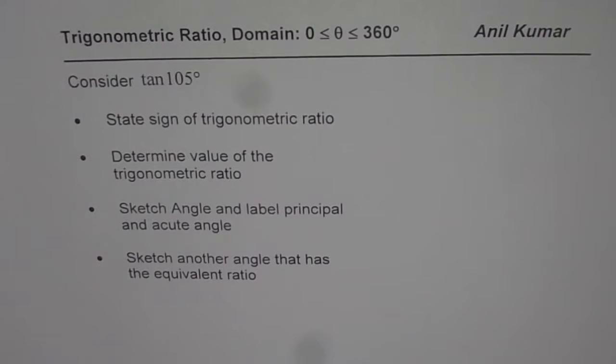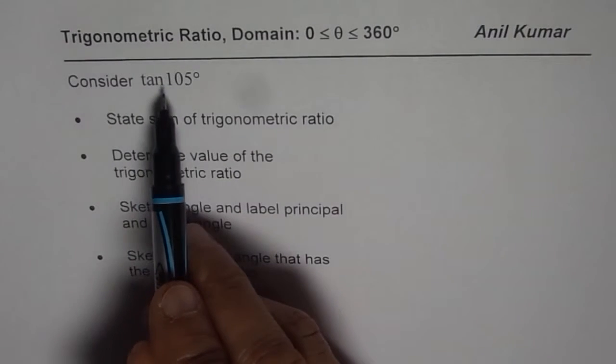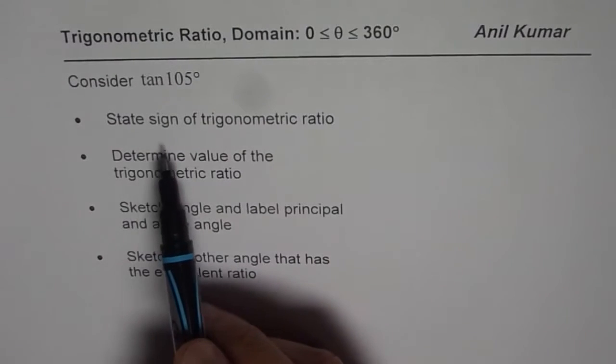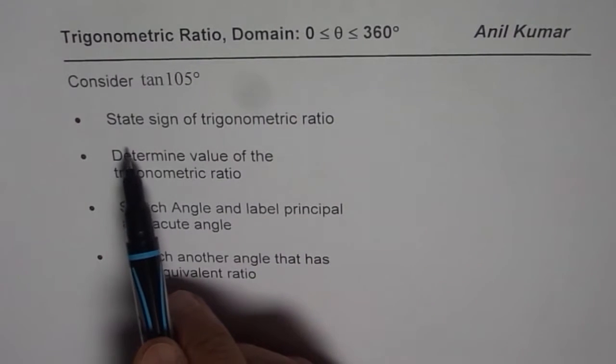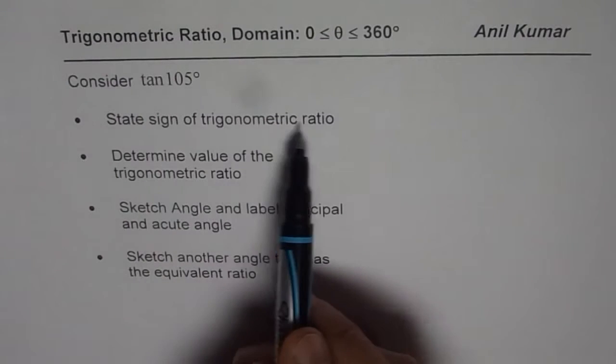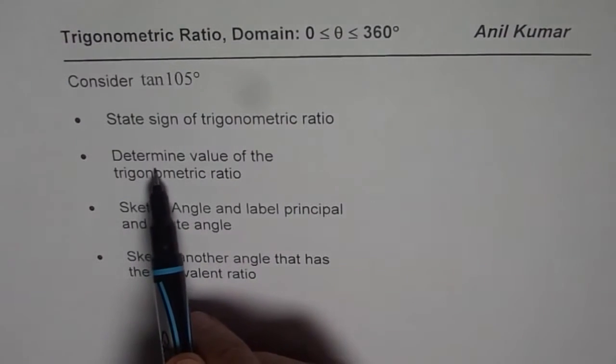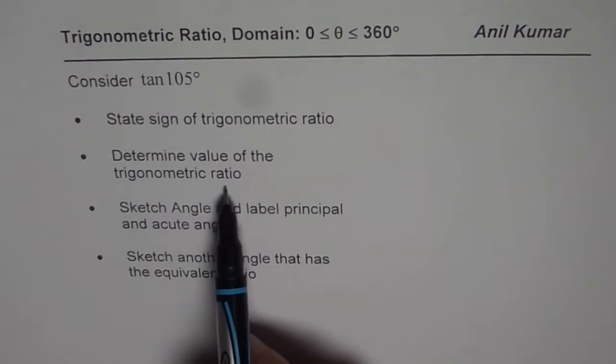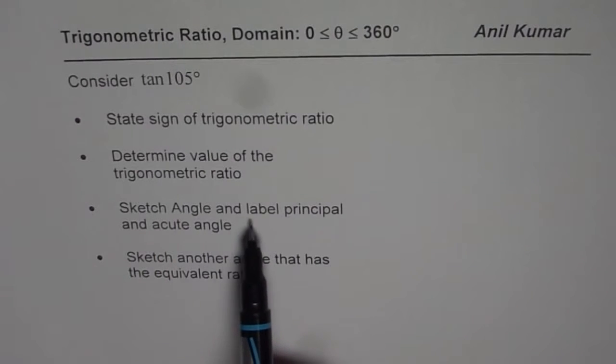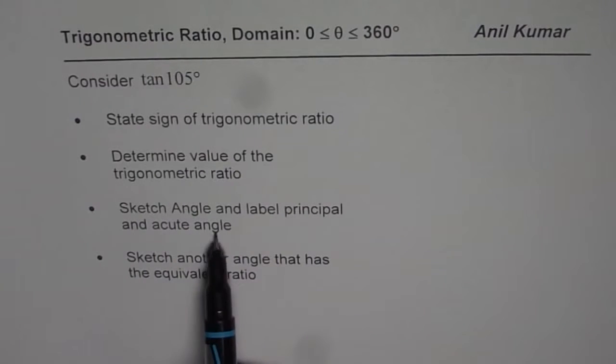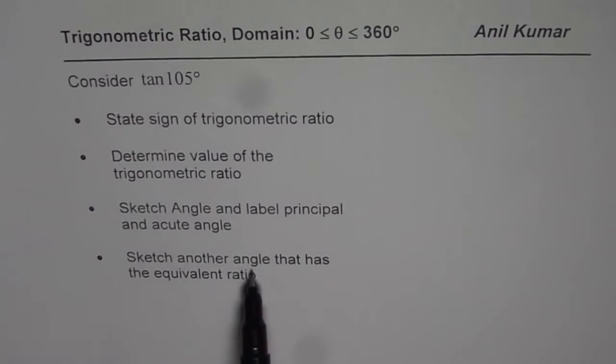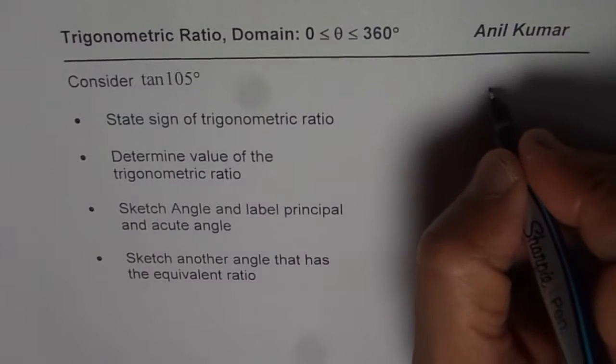I am Anil Kumar and now we are exploring trigonometric ratios in the domain of 0 to 360 degrees. Let us consider tan 105 degrees. Now for this we need to find, we need to state sign of trigonometric ratio, we need to determine value of the trigonometric ratio, sketch angle and label principal and acute angle, sketch another angle that has the equivalent ratio. So these are four different parts which we need to do.